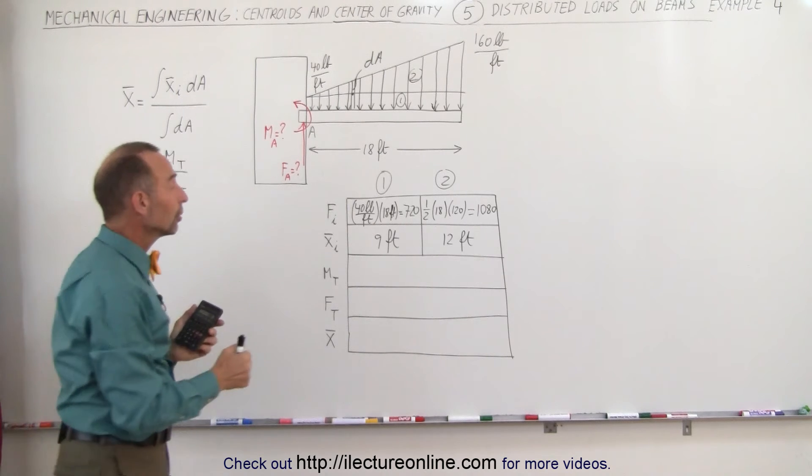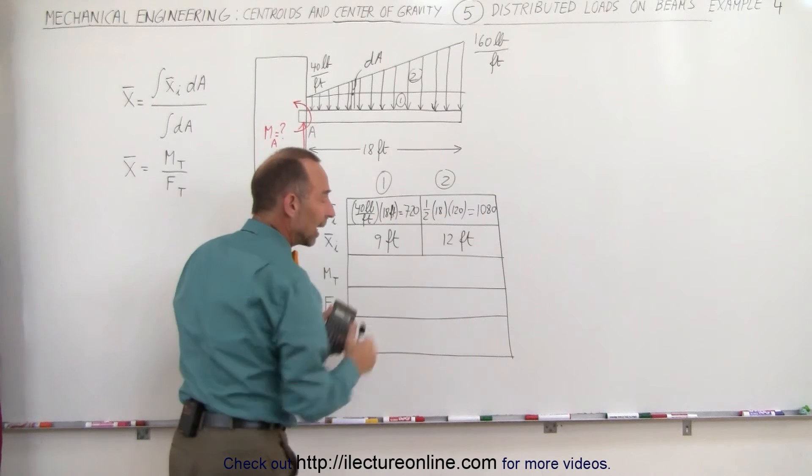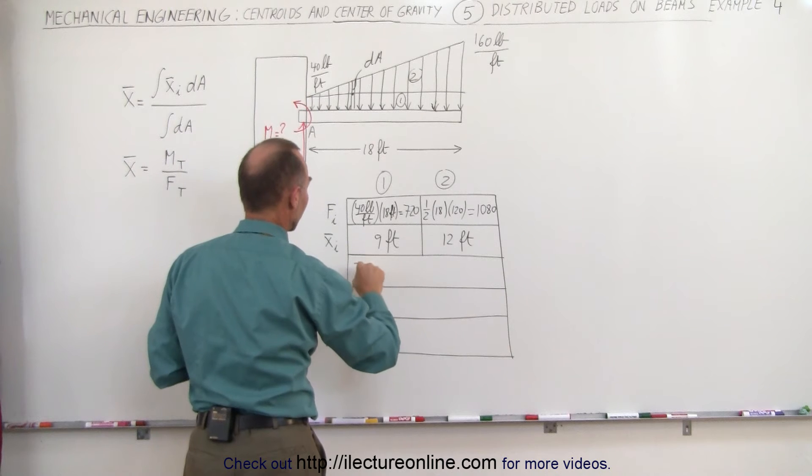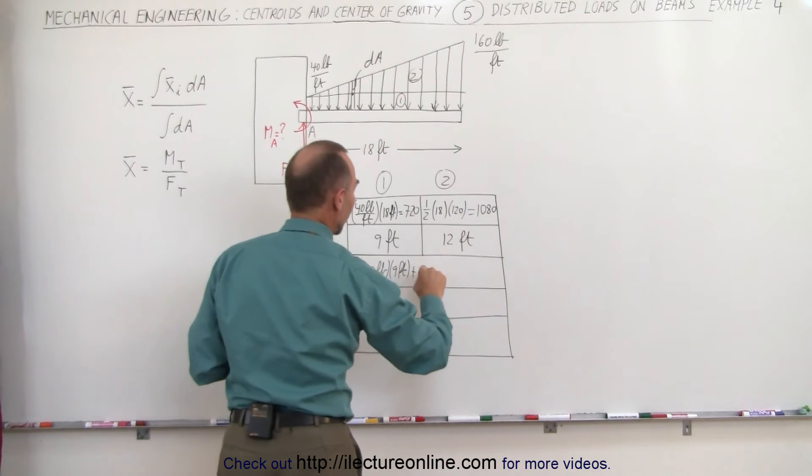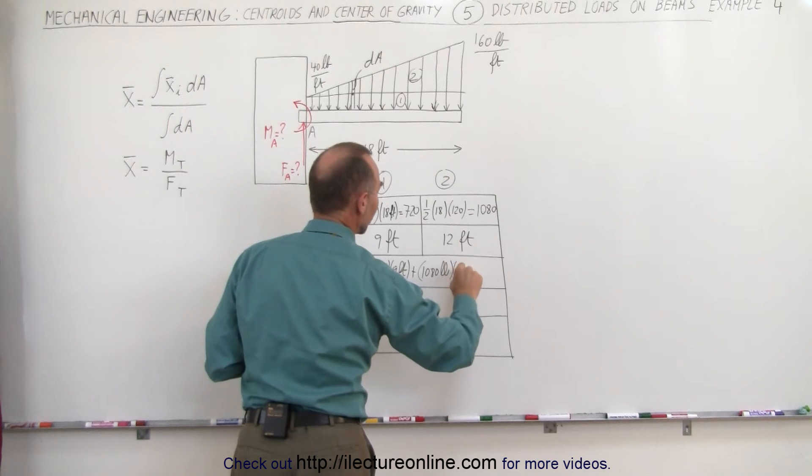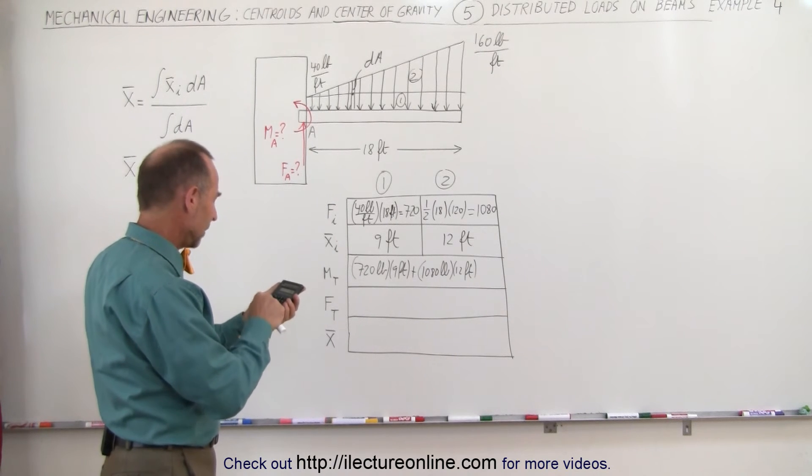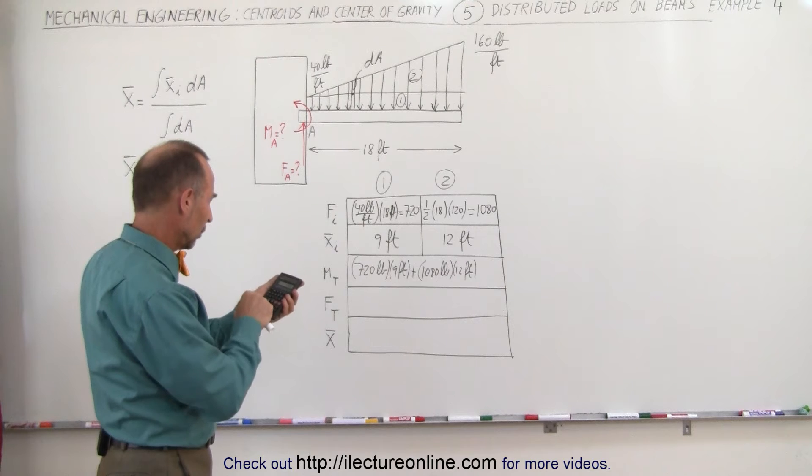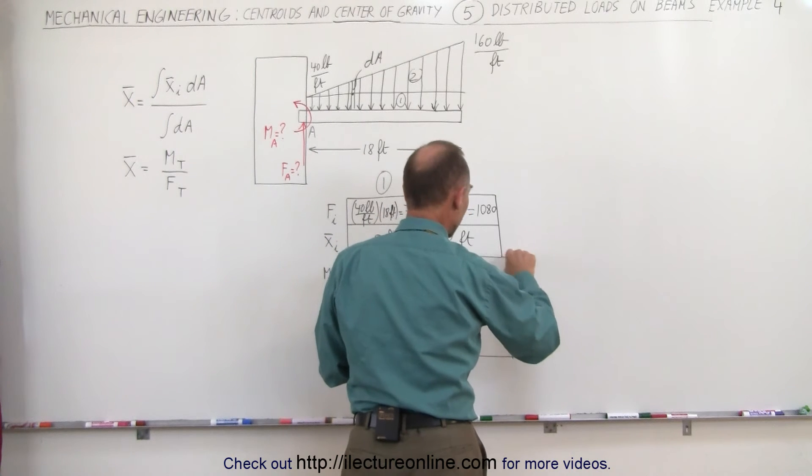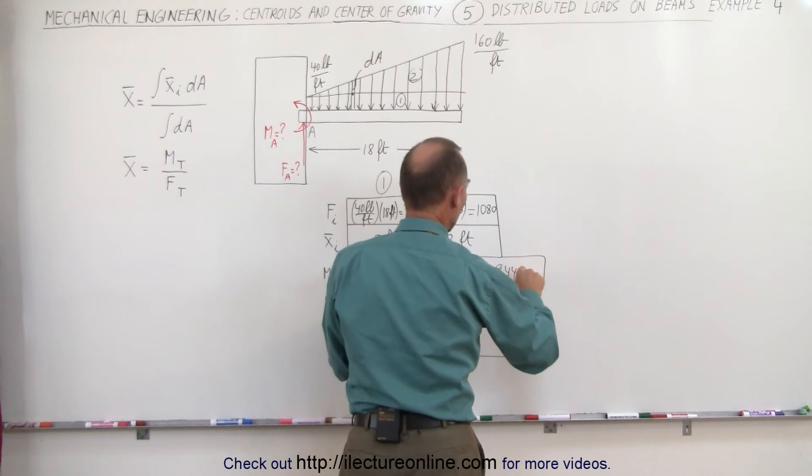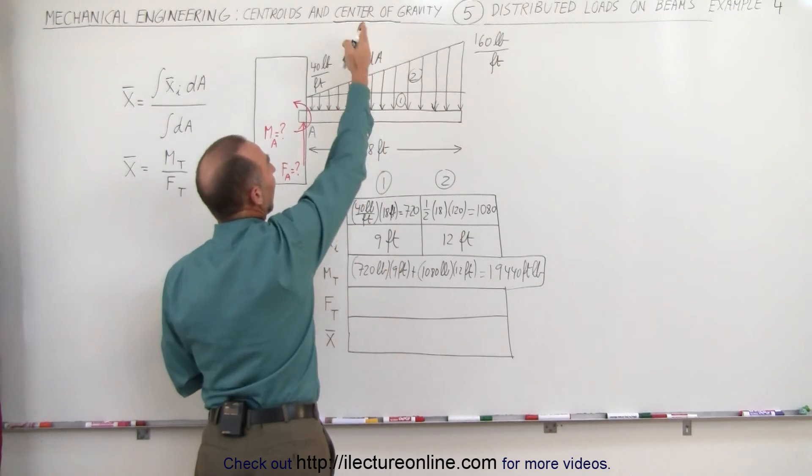To find the total moment we multiply the force distribution times the x-coordinate centroid and add them together. In this case we get 720 pounds times 9 feet plus 1080 pounds times 12 feet. 720 times 9 plus 1080 times 12 equals 19,440 foot pounds. That's the total moment caused by the load distribution acting at the centroid.